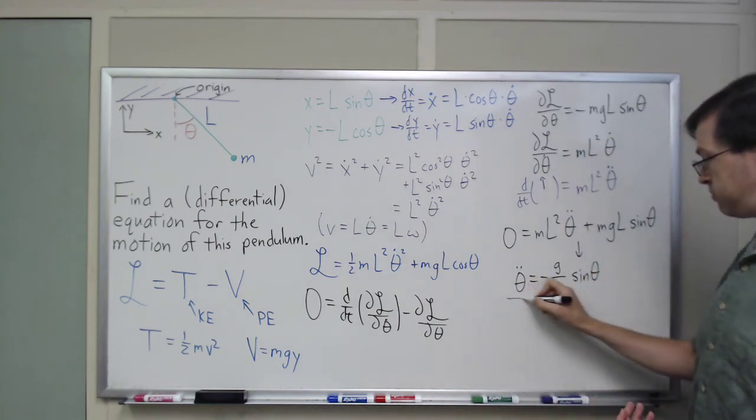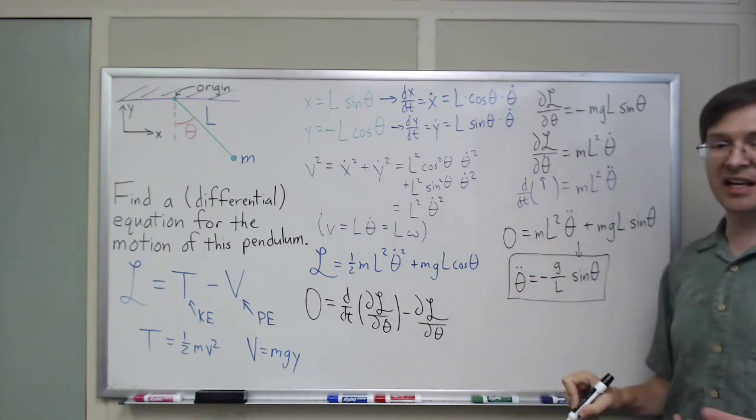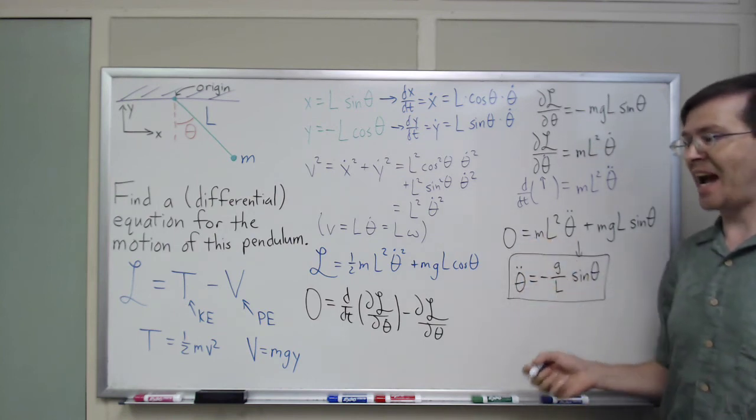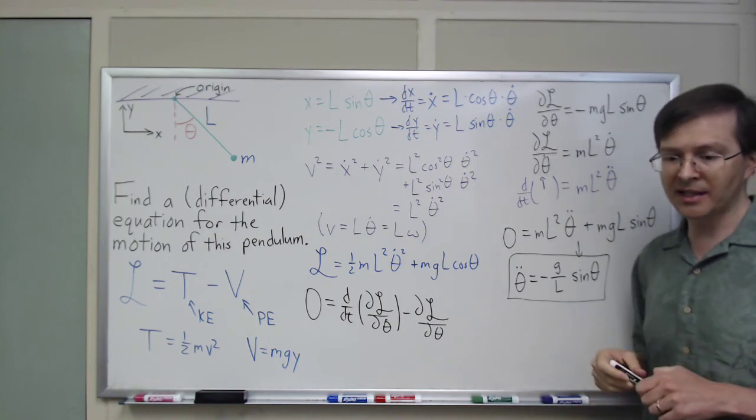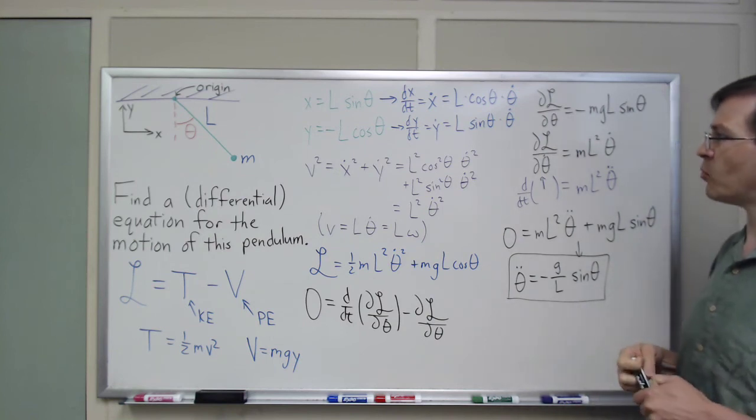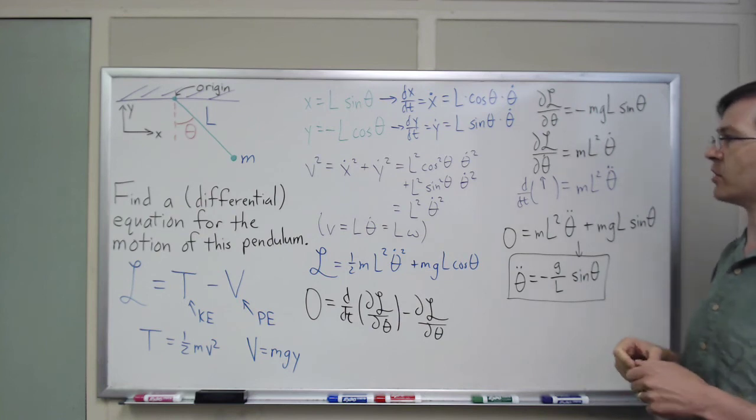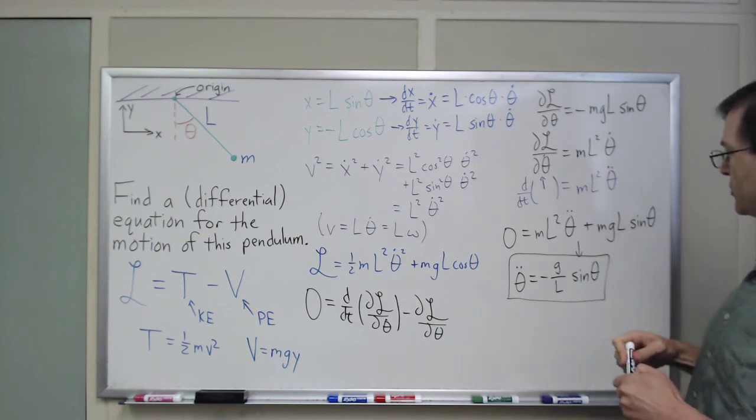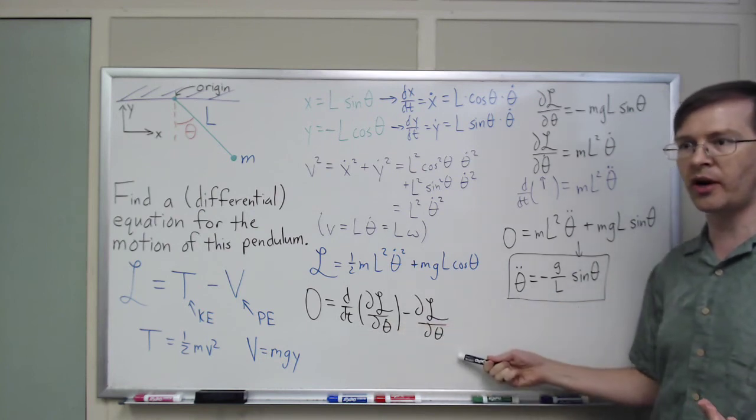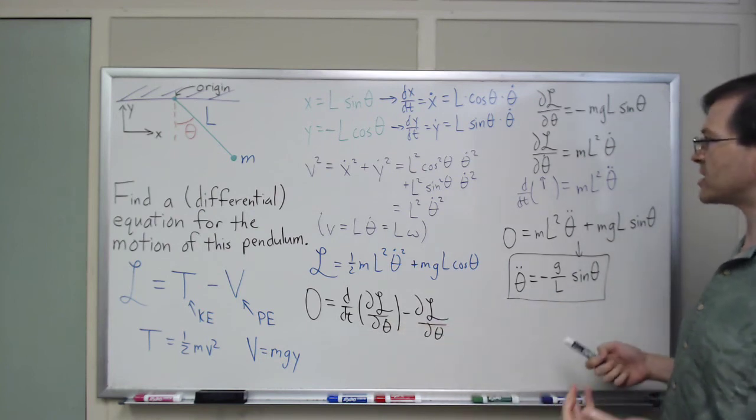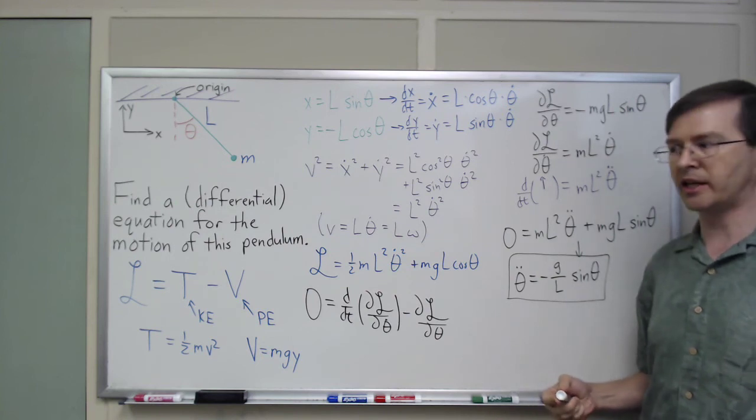That is our differential equation for theta. That is, in fact, the exact same thing that I got using Newton's laws, except using Newton's laws, I had a much more crammed board. I had a lot more steps, I had to take a lot more time derivatives, product rules and things. This, for me, once you know the Euler-Lagrange equations, this is a much smoother, cleaner process than the Newtonian case.